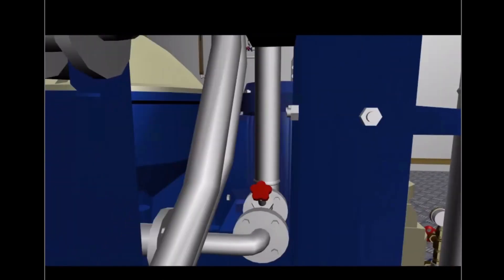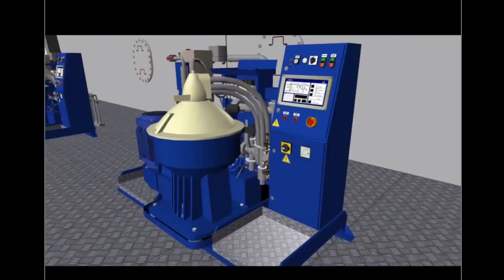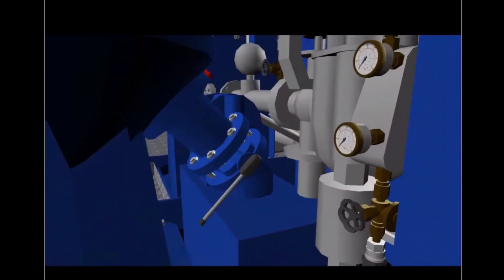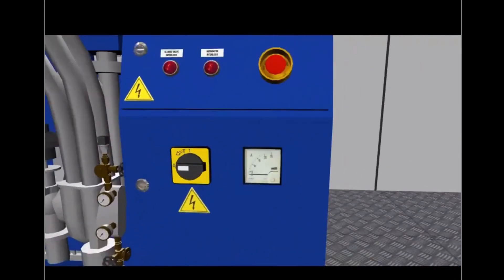The flow regulating valve should initially be set to about 50% open. Open the sludge outlet valve. Now switch on the power supply.